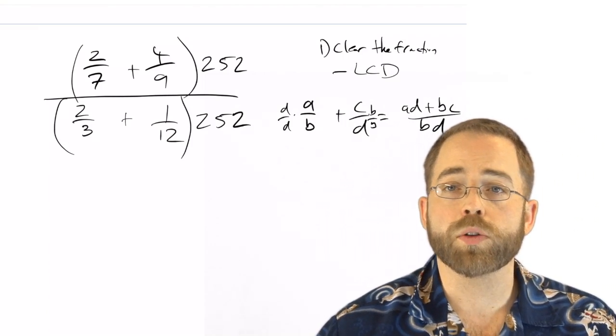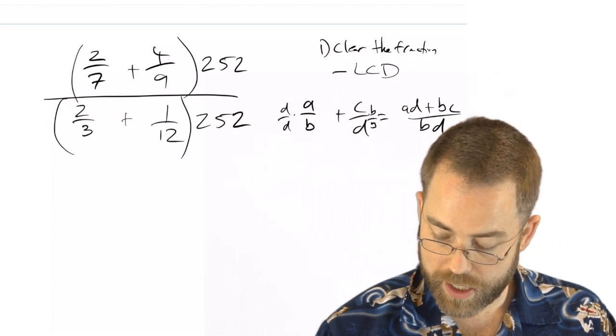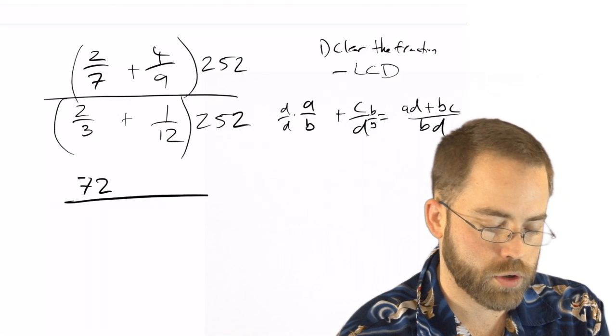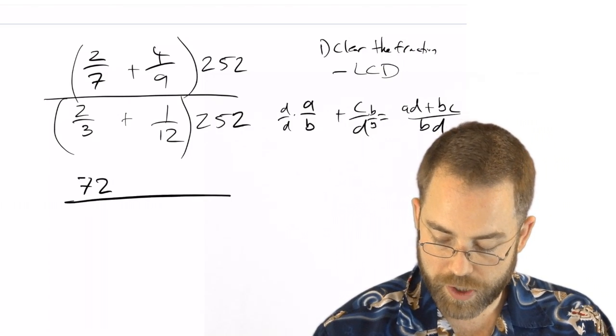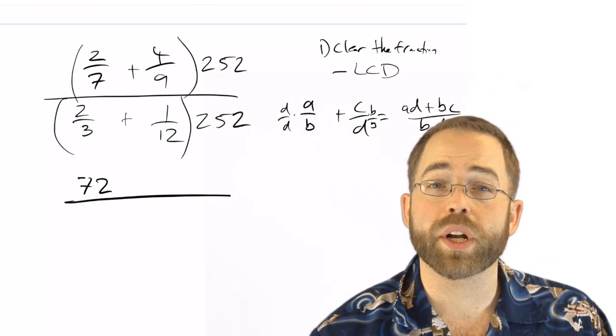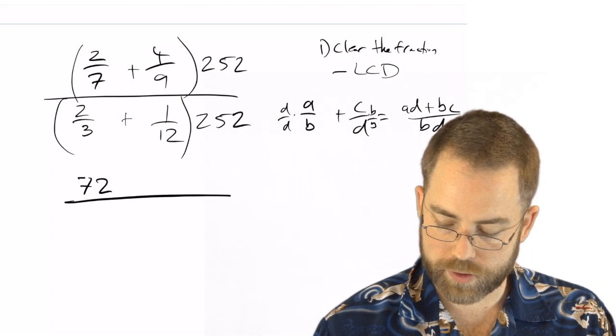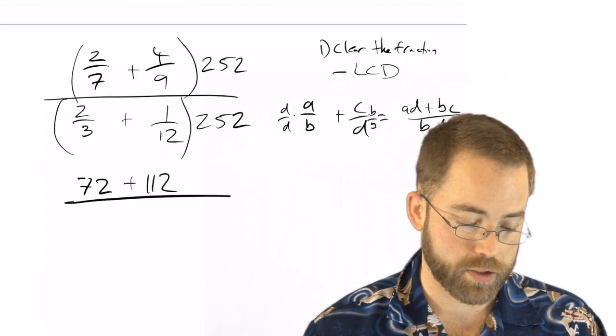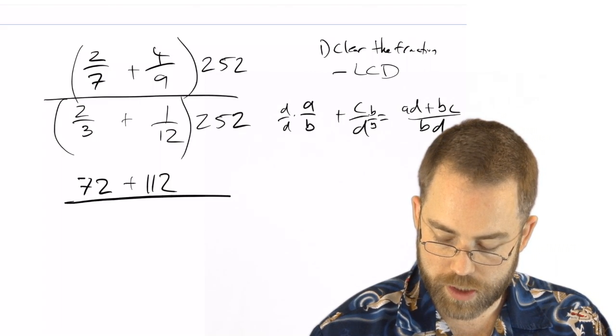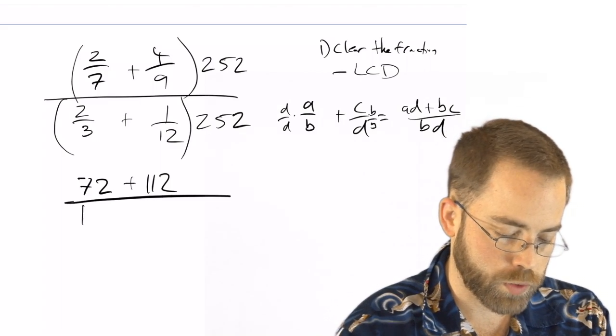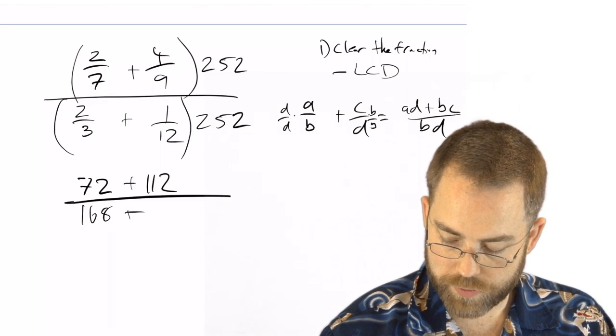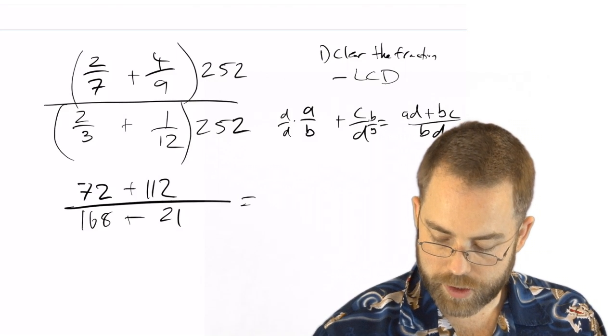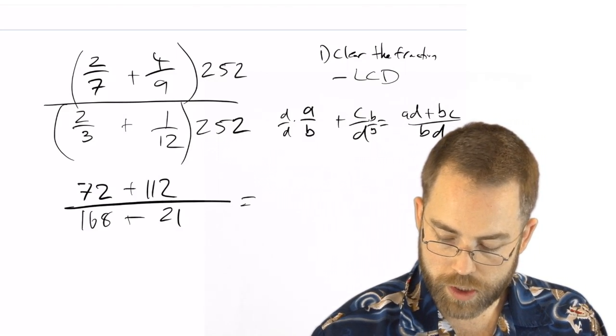So let's try to clean that up. If I am multiplying against the seven, then 252 divided by seven is 36, but I've got two of them, so this northwest corner has turned into 72. If I have 252 divided by nine, that's 28, but times four is 112. So you can see already the benefit of this. We have cleaned up the numerator, it no longer has fractions in it. 252 divided by three is 84 times two is 168. And 252 divided by 12 is 21. So we have nearly cleaned everything up.